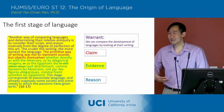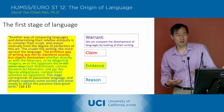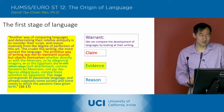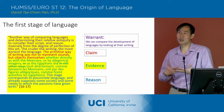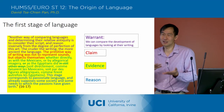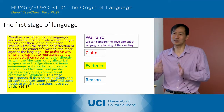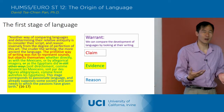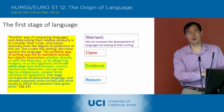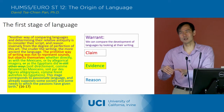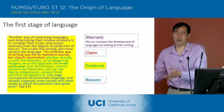Once he lays this out, he then wants to give us a kind of history. He lays out these three stages of language in which you've got the earlier languages, sort of the middle languages, and the final languages.